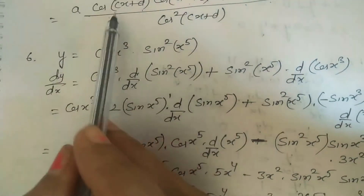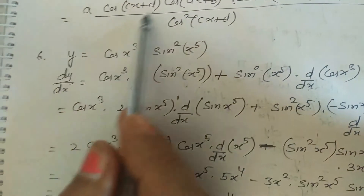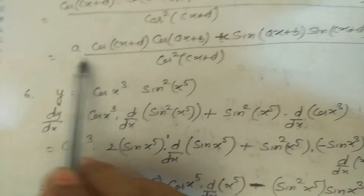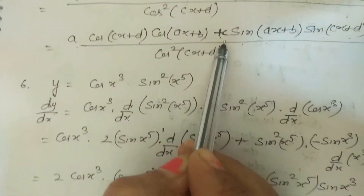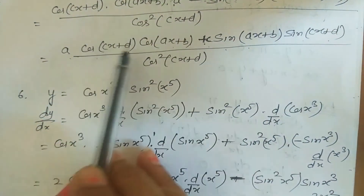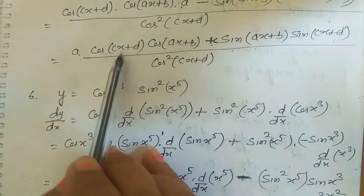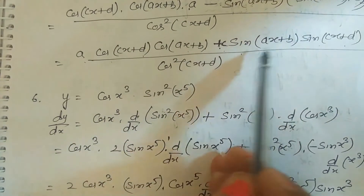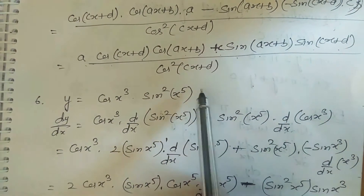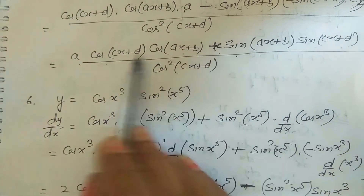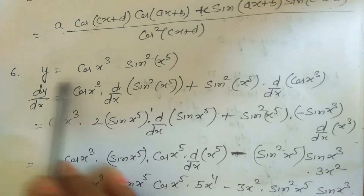We cannot simplify further here because one factor has coefficient a and the other c. If they were equal, we could use the identity cos A cos B + sin A sin B = cos(A−B), but since they differ we leave the answer as is.